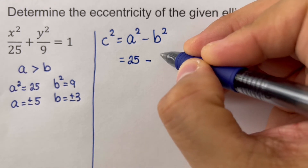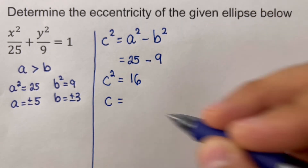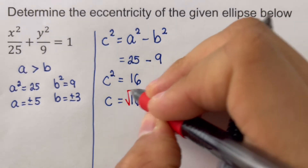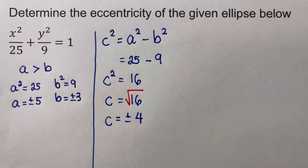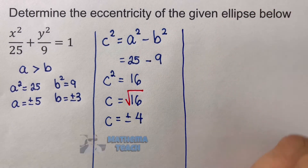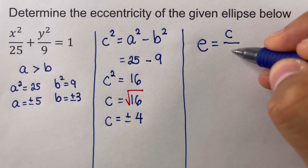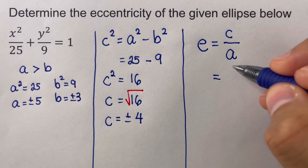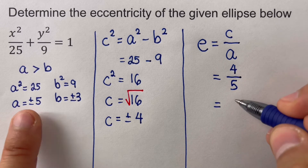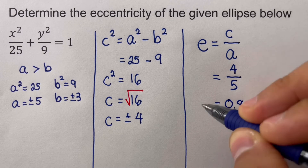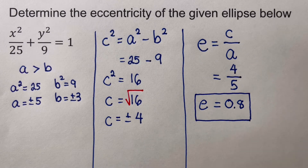So c² = 16, and solving for c gives us the square root of 16, so c = ±4. Now we compute the eccentricity: e = c/a, so we plug in c = 4 over a = 5, which gives us 0.8. The eccentricity of this ellipse is 0.8. Now let's move on to the next example.